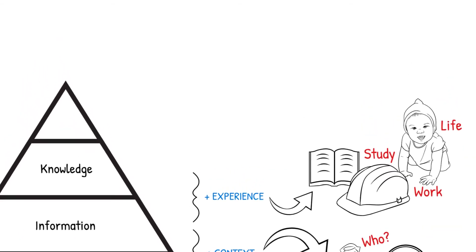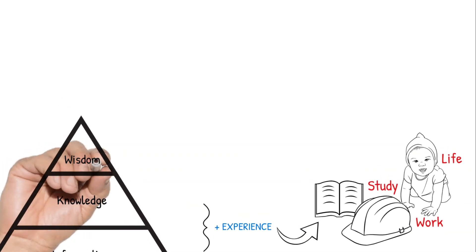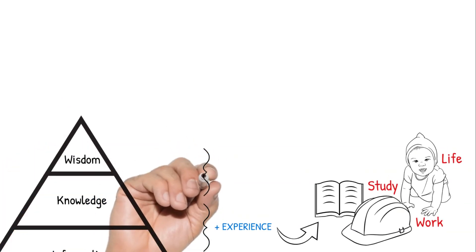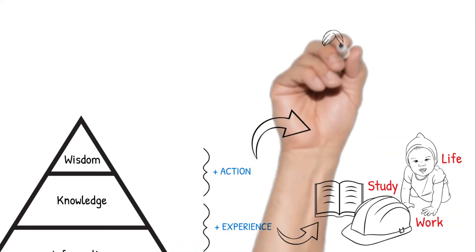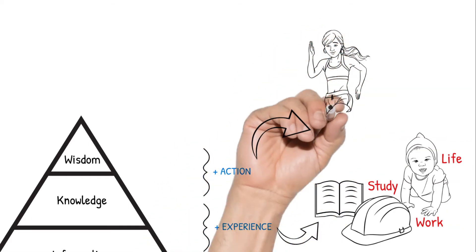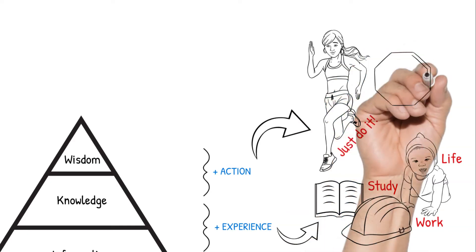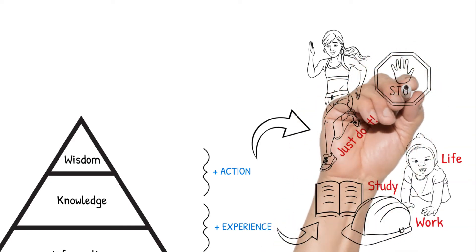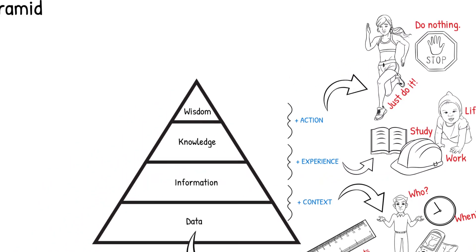At the narrow top of the pyramid we have wisdom. Wisdom is knowledge plus the addition of action. Wisdom determines what we do or do not do, for that matter. Wisdom is also subjective as it depends on our interpretation of prior knowledge.